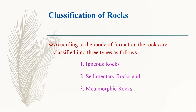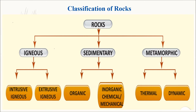Next, we are going to learn about the classification of rocks. According to the mode of formation, rocks are classified into three types: igneous rocks, sedimentary rocks and metamorphic rocks. Igneous rocks are classified into intrusive and extrusive igneous rocks. Sedimentary rocks are classified into organic and inorganic rocks — inorganic being further divided into chemical and mechanical. Metamorphic rocks are classified into two: thermal and dynamic.